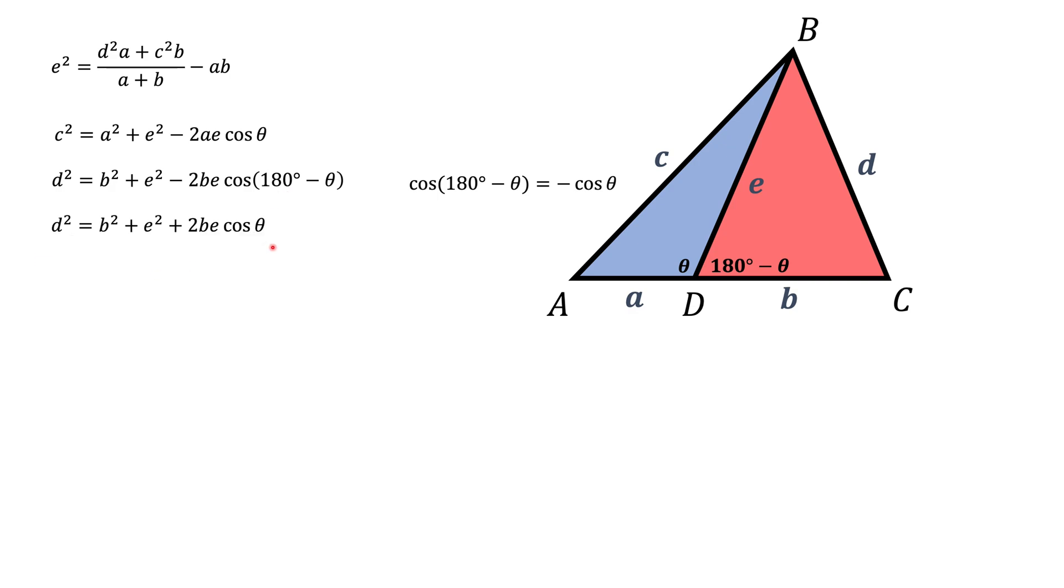And now what we need to do is to multiply the top formula by B and the bottom formula by A and then add them together. In this case, cos will go away and the whole expression is going to look like this. And this is really it. This is our Stewart's theorem.